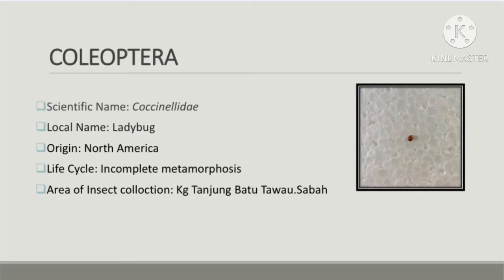Next is from order Coleoptera and the scientific name is Coccinellidae. The local name is ladybug, originating from North America. The life cycle is incomplete metamorphosis, and I collected it in the same area, Kampung Tanjung Batu, Tawau, Sabah. Most ladybugs have oval, dome-shaped bodies with six short legs. Depending on the species they can have spots, stripes, or no markings at all. The seven-spotted ladybug is red or orange with three spots on each side and one in the middle. They have a black head with white patches on either side.